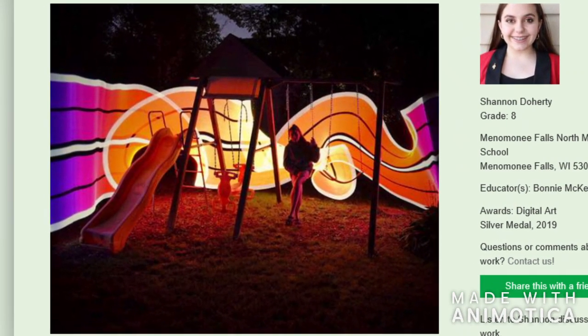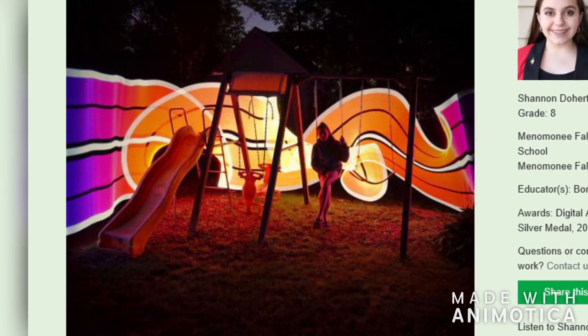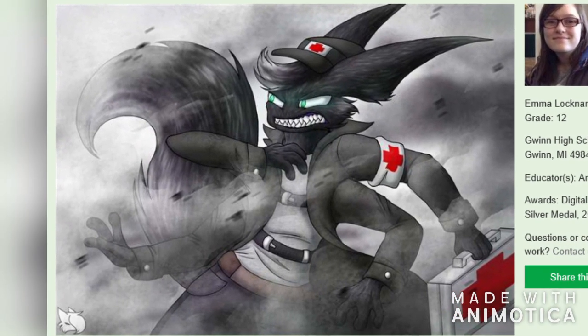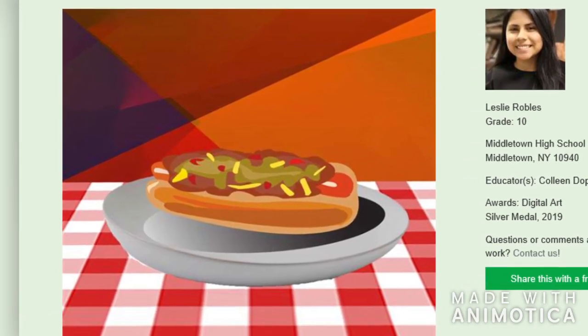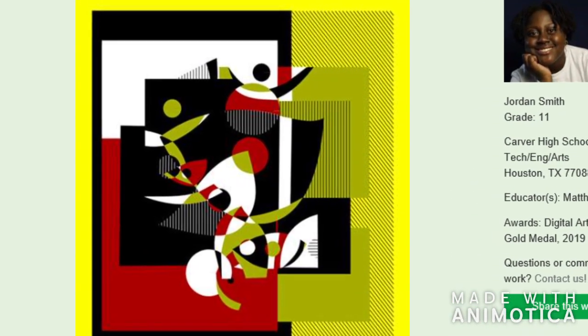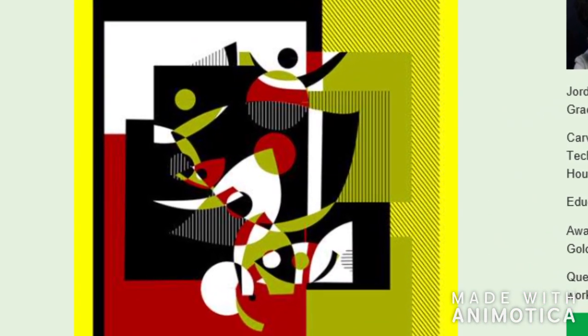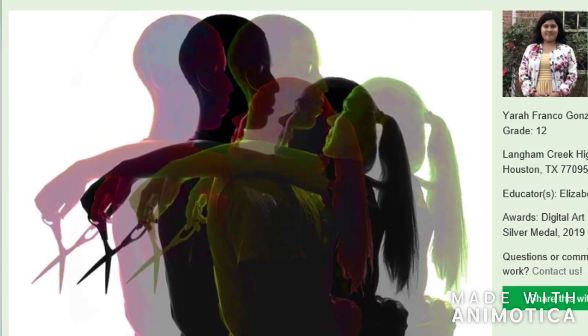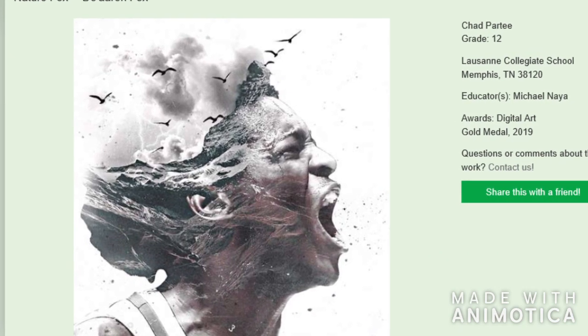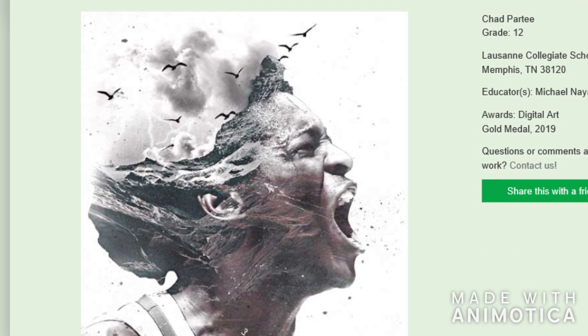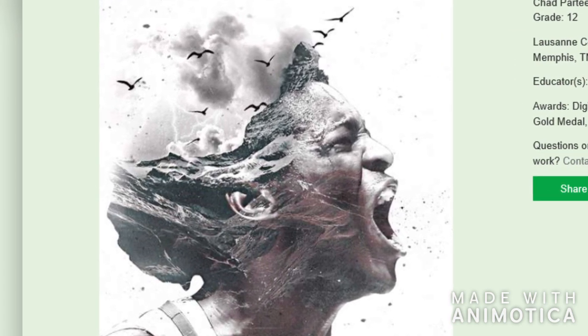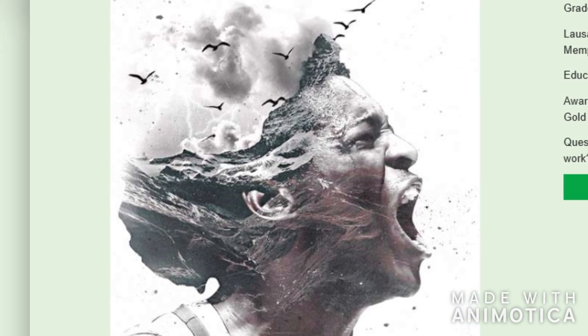Take a look at some of the prior winners in the digital art category. They are all very different. Some may express an emotion, like this piece with a woman who not only has an expression of extreme emotion, but has an overlay of stormy waters and flustered birds as they take off in flight.